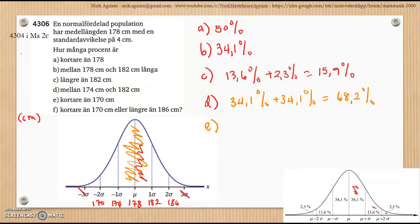Kortare än 170. Så den här och den där — allting nu då. Det betyder den här, allting den där. Så det blir 2,3%.